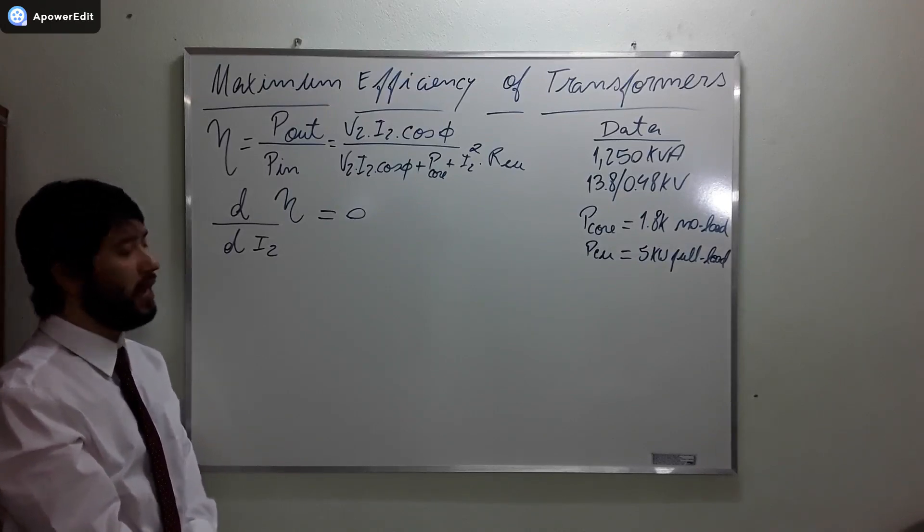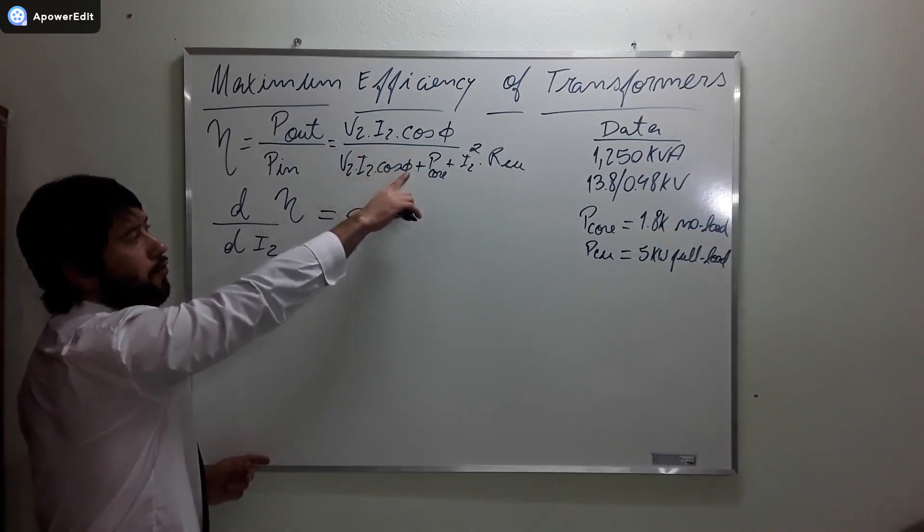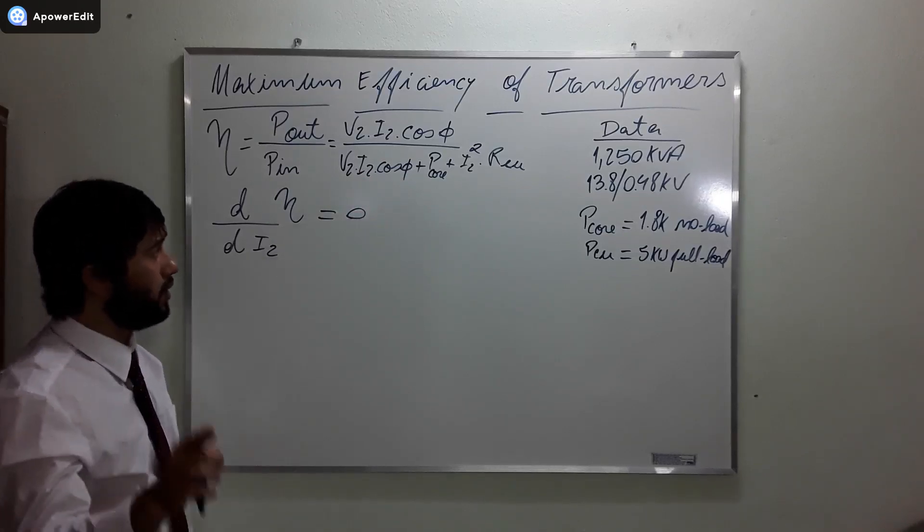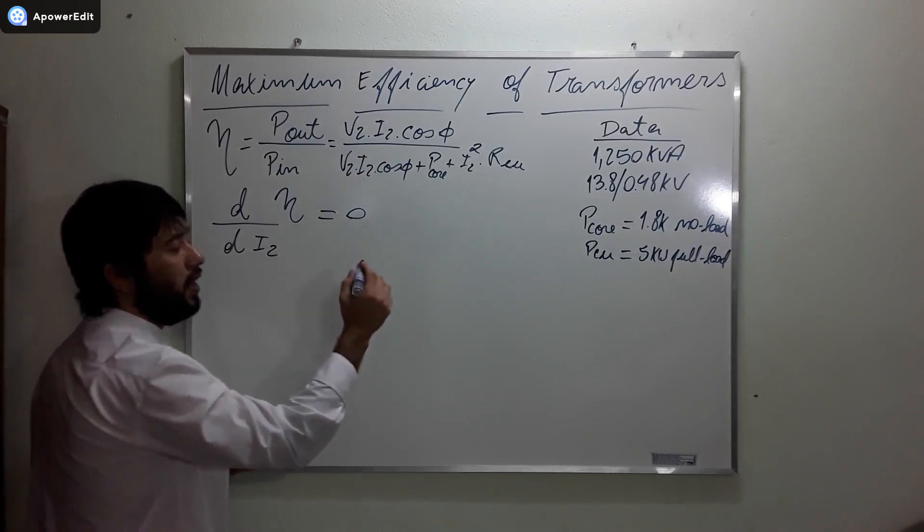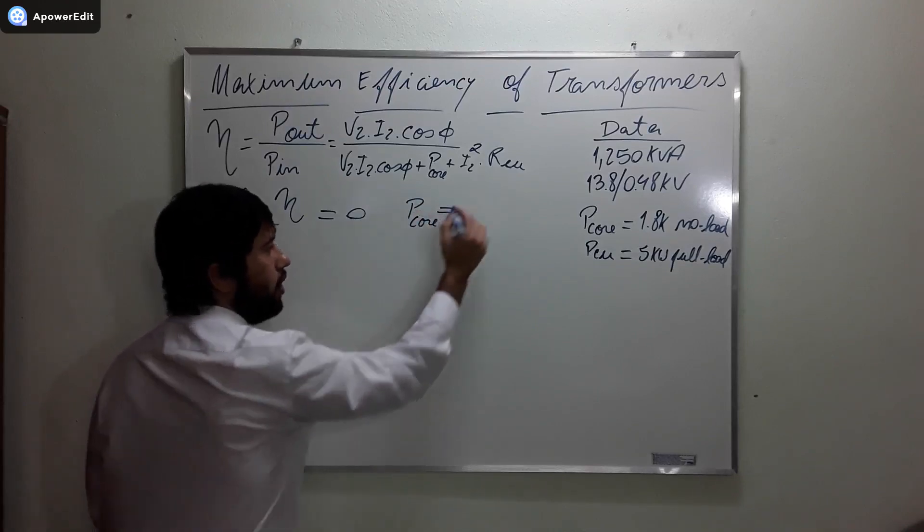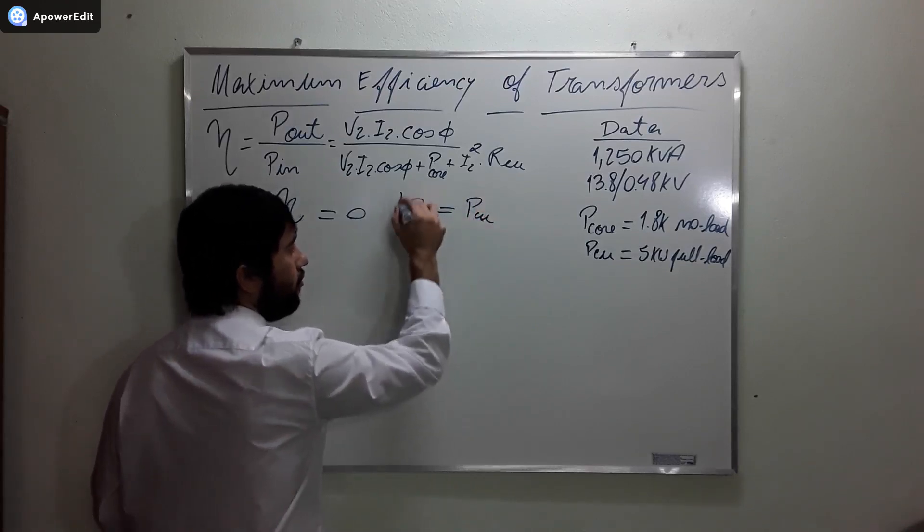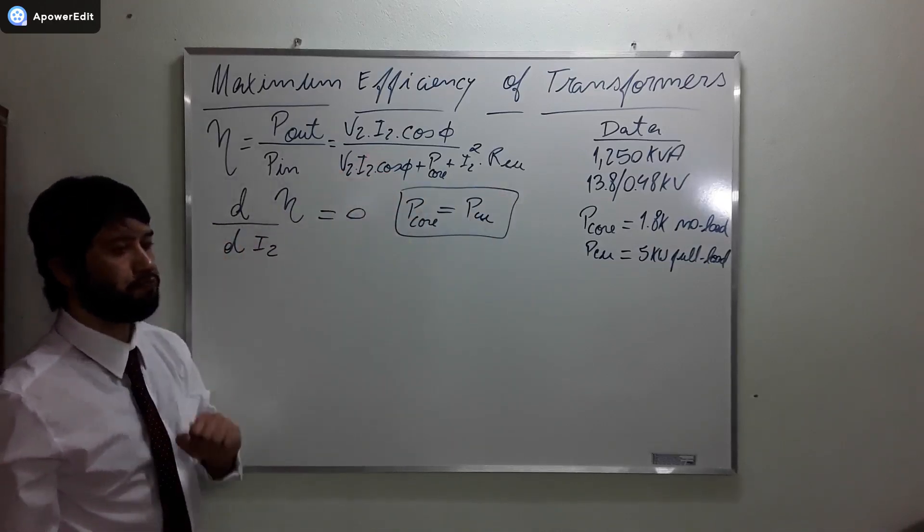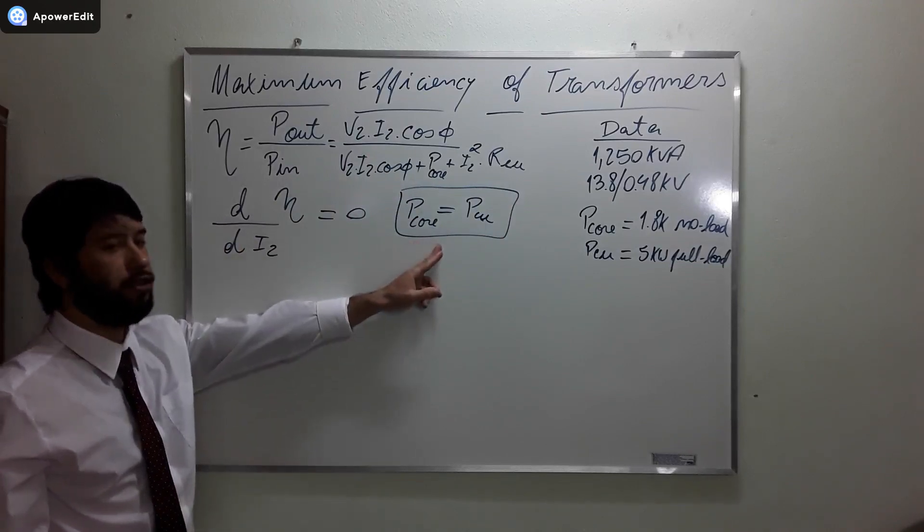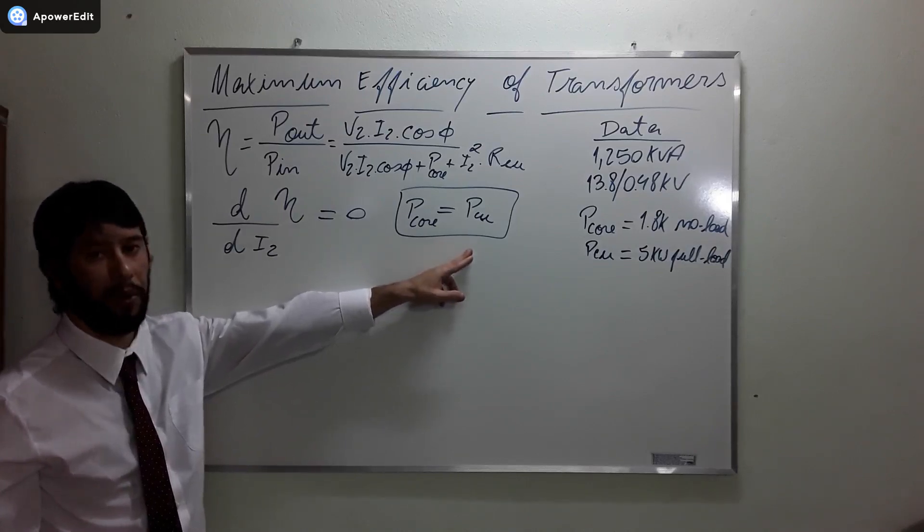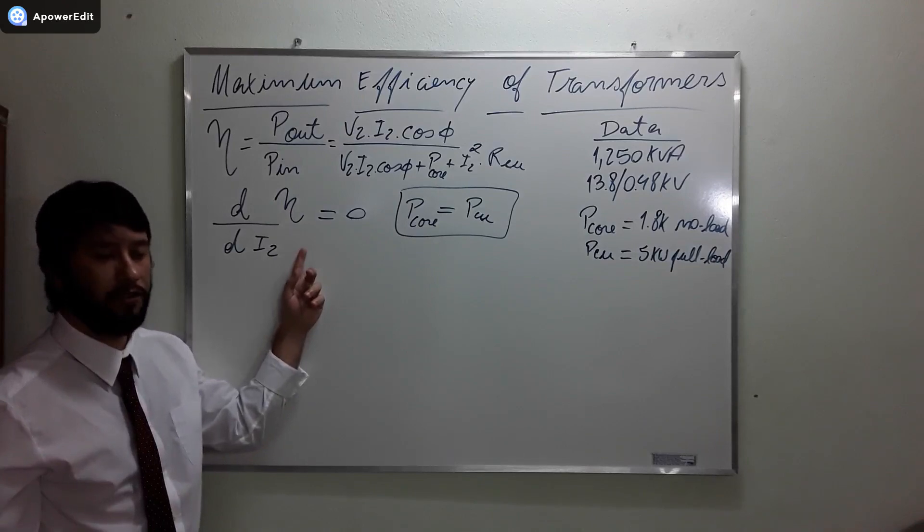And if we take the derivative of this expression here, I'm going to let you try it. But I'm going to tell you in advance that it means that the core losses have to be equal to the copper losses. You are going to develop this derivative and you are going to reach this conclusion here, that when the core losses are equal to the copper losses, we have maximized the efficiency of the transformer.